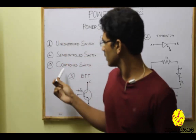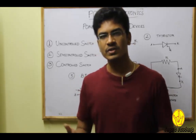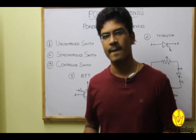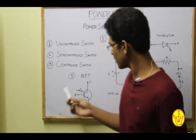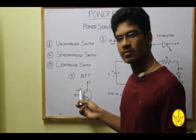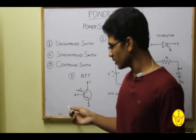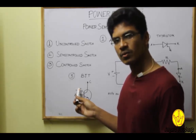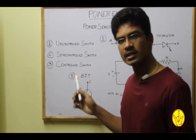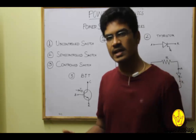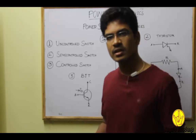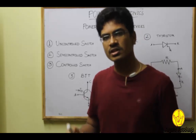Coming to the third one, the controlled switch. A controlled switch is one where we can either turn ON or turn OFF by using a control terminal. Consider the example of a BJT. By giving a base current IB to the transistor, we can turn it ON. By making the base current IB equal to zero, we can turn it OFF. So a controlled switch can be defined as one where we can control the switch in both directions — that is, in ON state or in OFF state.